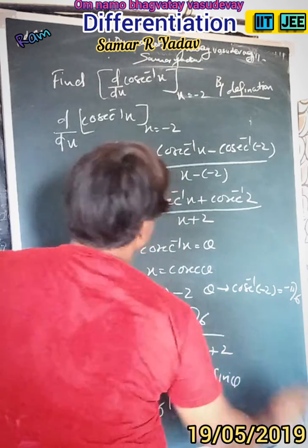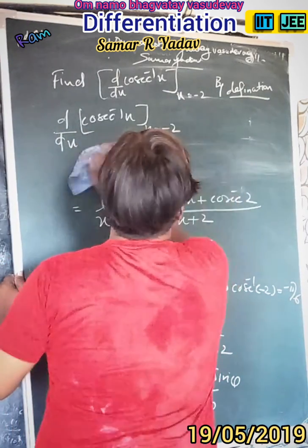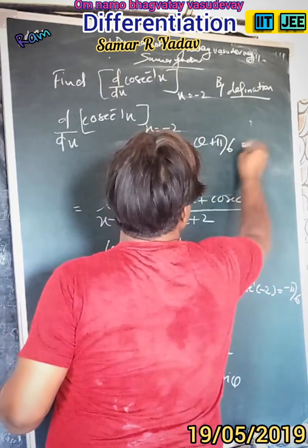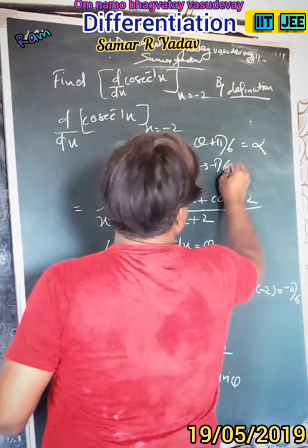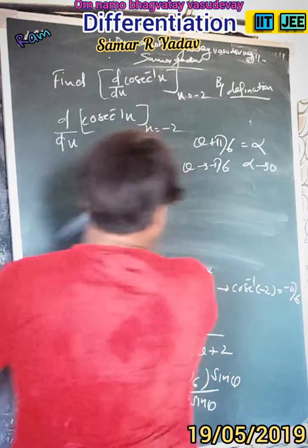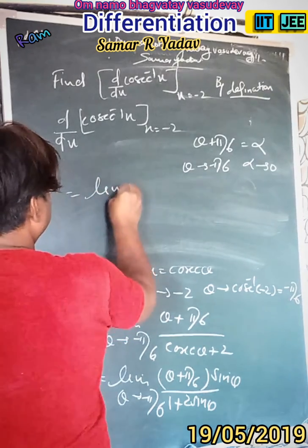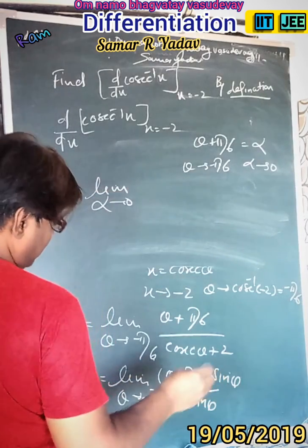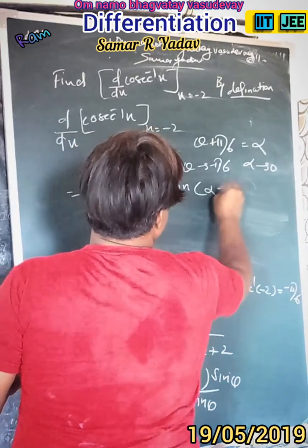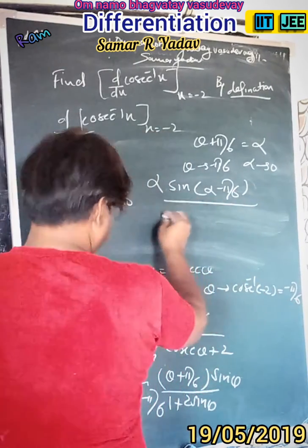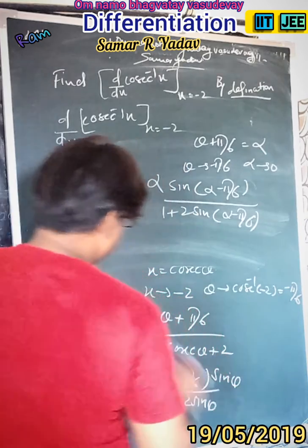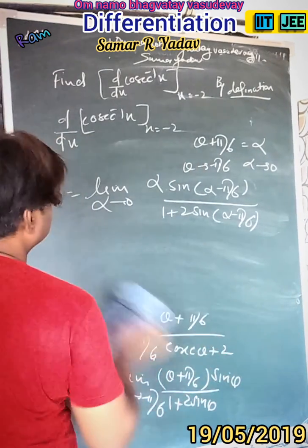Now again, let θ + 5π/6 = α. When θ tends to -5π/6, then α tends to 0. So using this substitution, the expression becomes: limit α tends to 0 of α upon [1 + 2sin(α - 5π/6)], which we can write as α times sin(α - 5π/6).